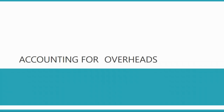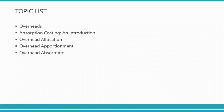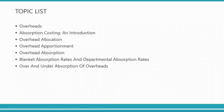In this chapter we'll discuss production and non-production overheads. We are going to focus mainly on fixed production overheads. You may have variable production overheads, fixed production overheads, variable non-production, and fixed non-production — out of these four types, we focus more on fixed production overheads. Our topic list includes absorption costing, overhead allocation, overhead apportionment, overhead absorption, blanket absorption rates, over and under absorption of overheads, and ledger entries relating to overheads.